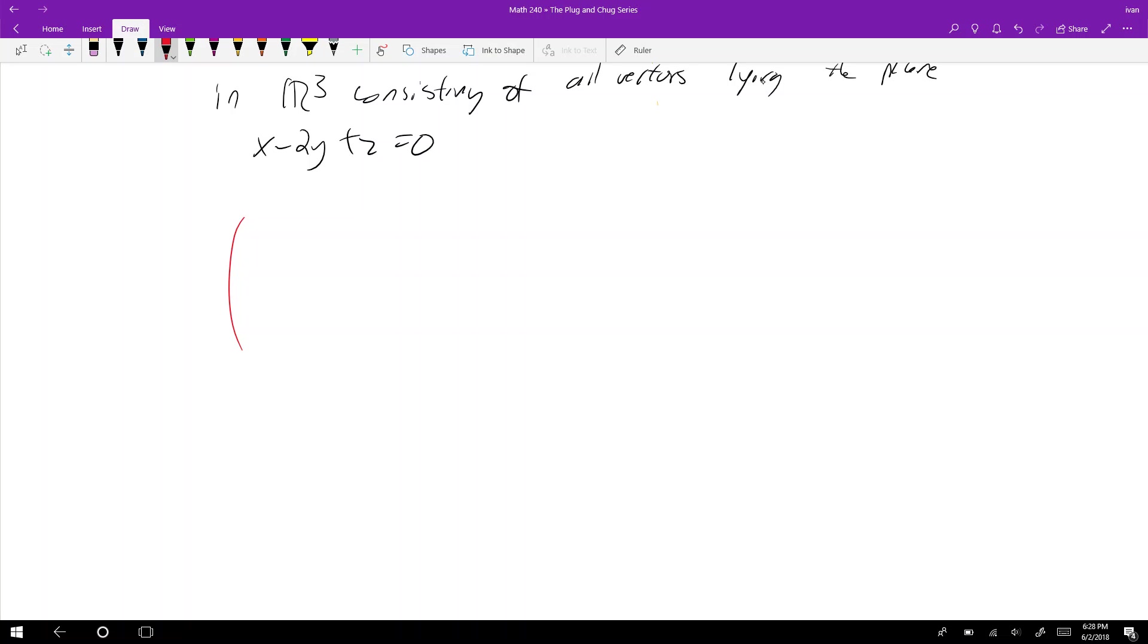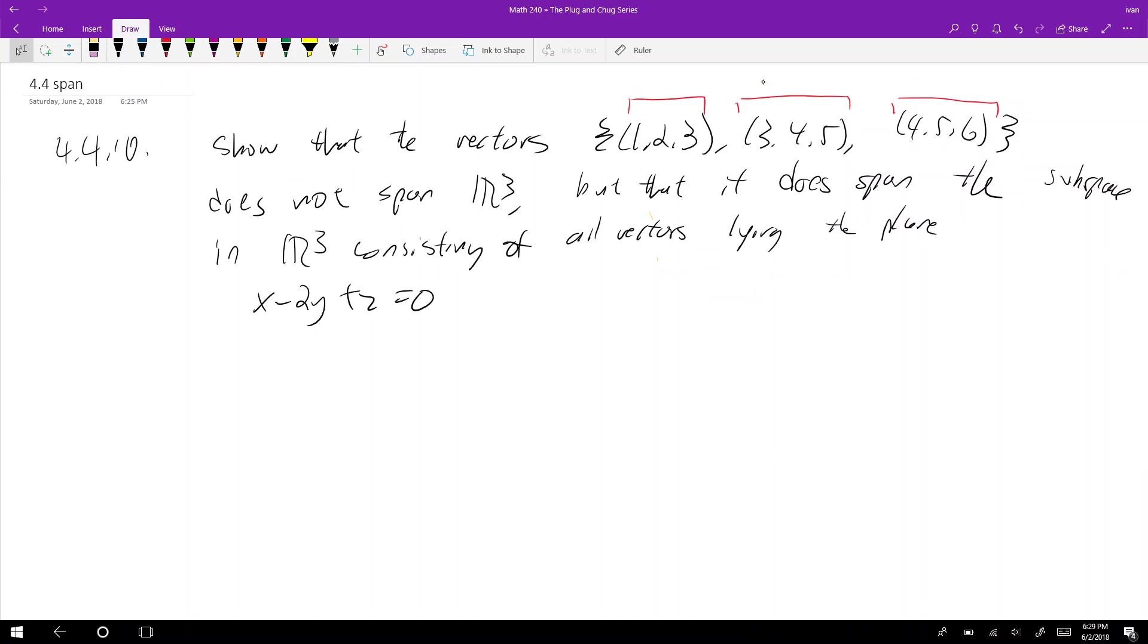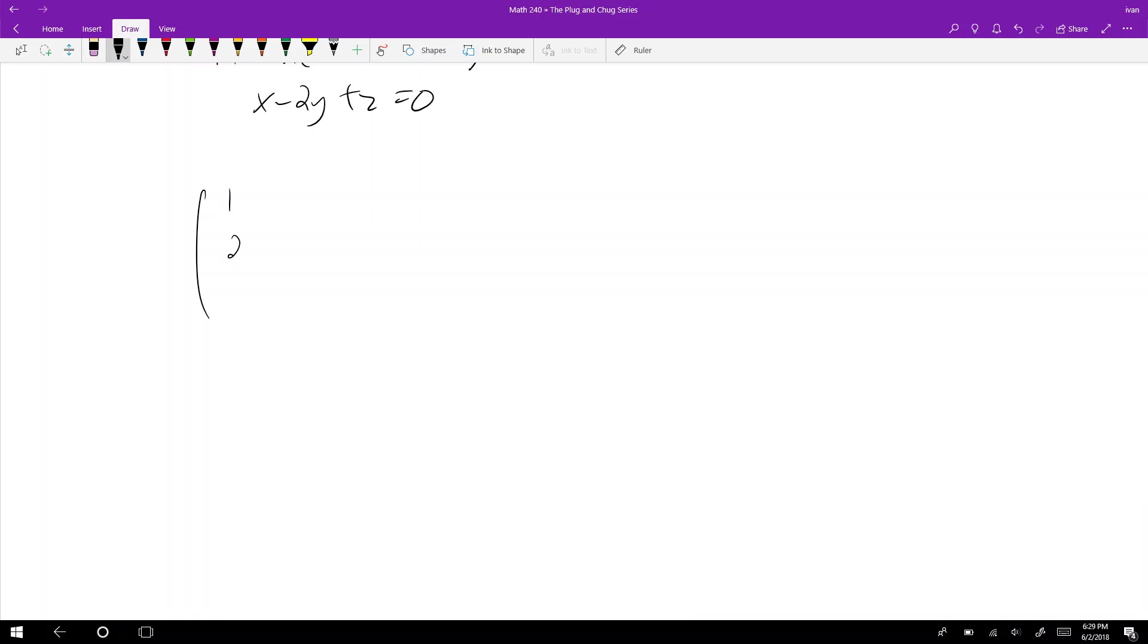I'm going to throw the vectors into this matrix: [1 3 4; 2 4 5; 3 5 6]. I'm trying to show it doesn't span R3, so I want to show that a times (1,2,3) plus b times (3,4,5) plus c times (4,5,6) doesn't equal (x,y,z) for every x, y, z. That means there's some vectors in R3, where (x,y,z) is your standard vector with three components.